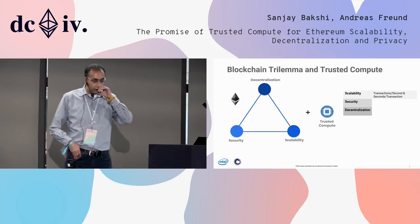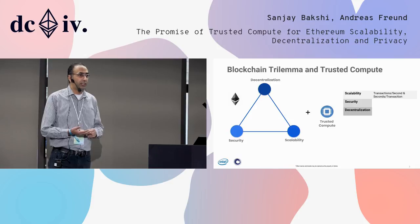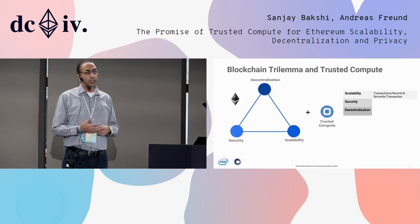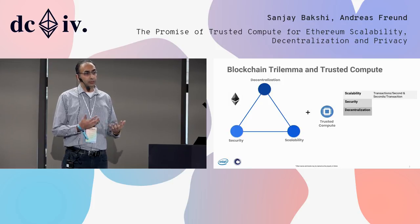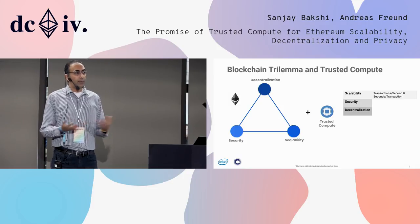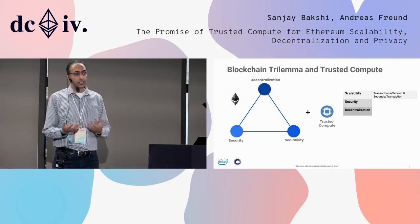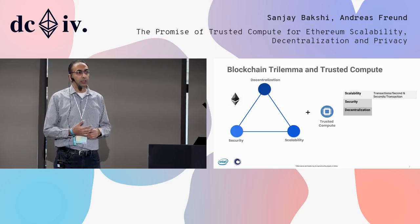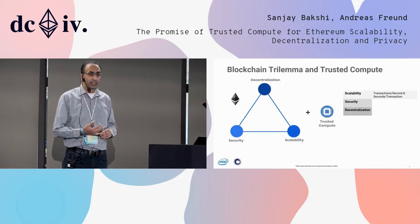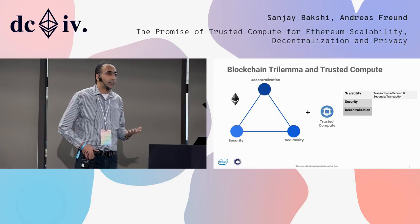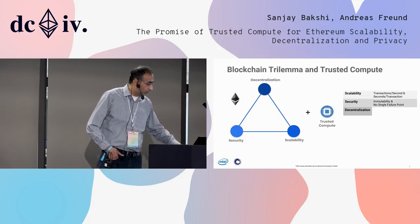Scalability is plainly about transactions per second or seconds per transaction. We believe that given the way trusted computes work — the integrity of execution and similar properties — you can combine them with constructs like plasma chains and side chains, and achieve a lot of scalability. There has been work done in this space, and some of that will be discussed in the breakout tomorrow.